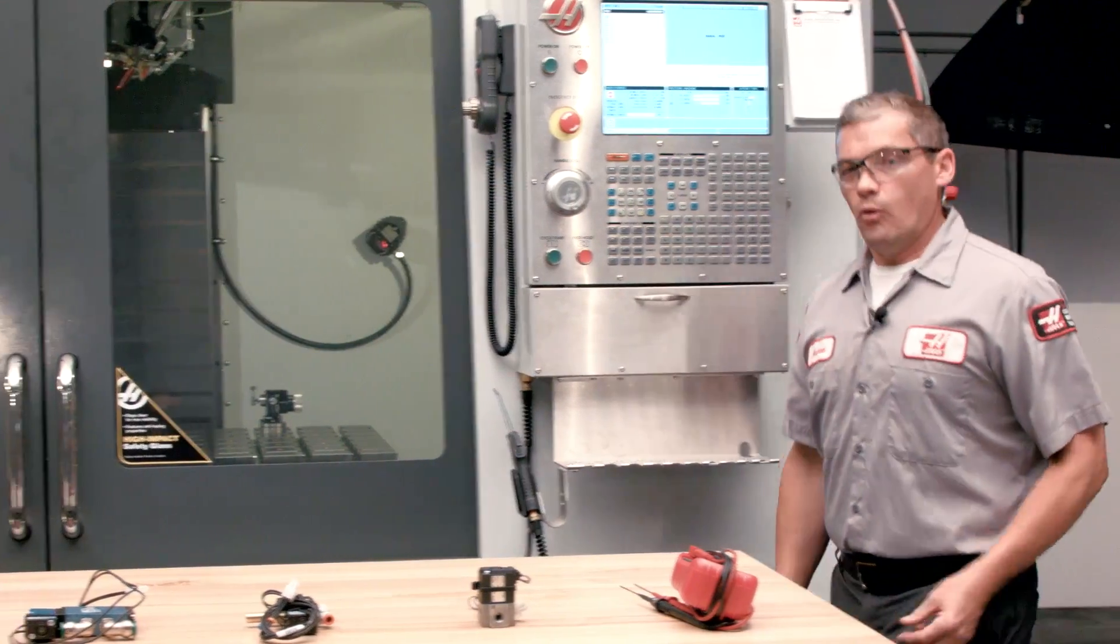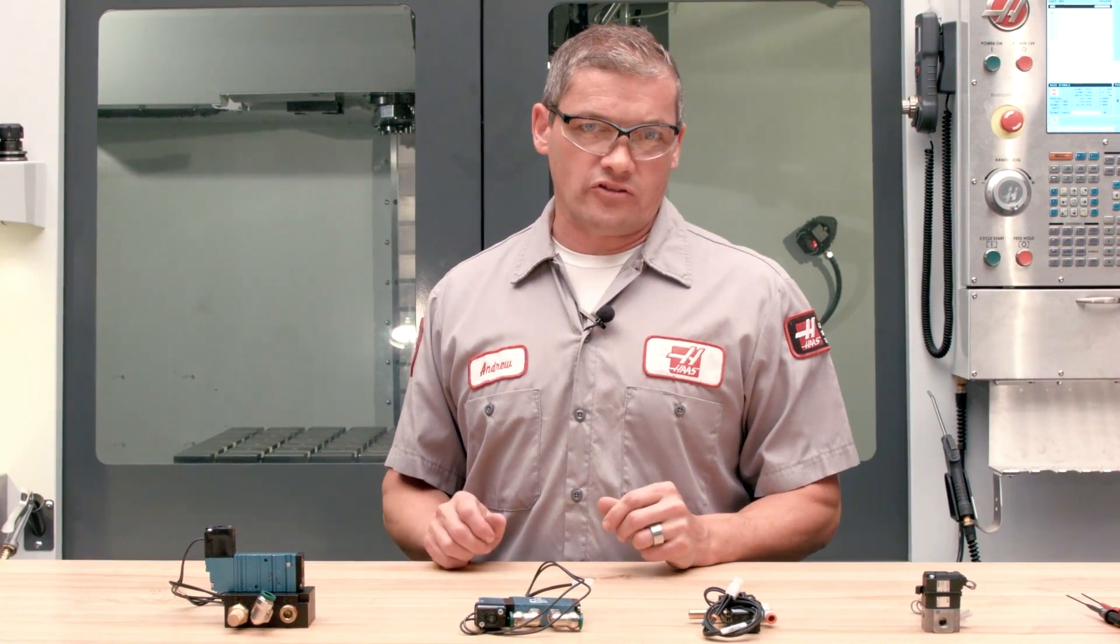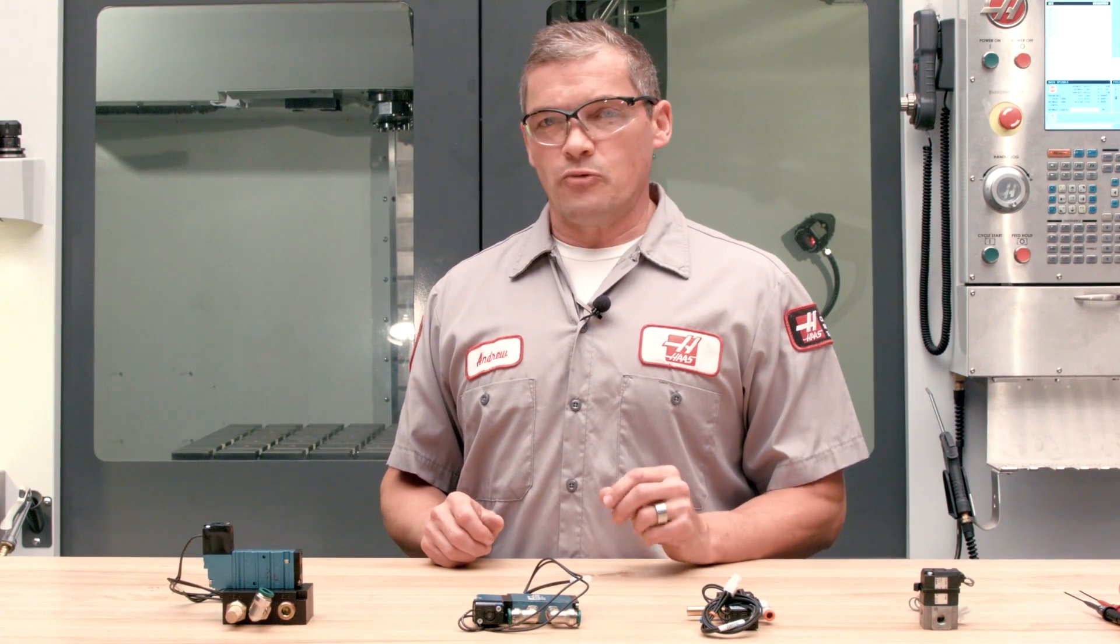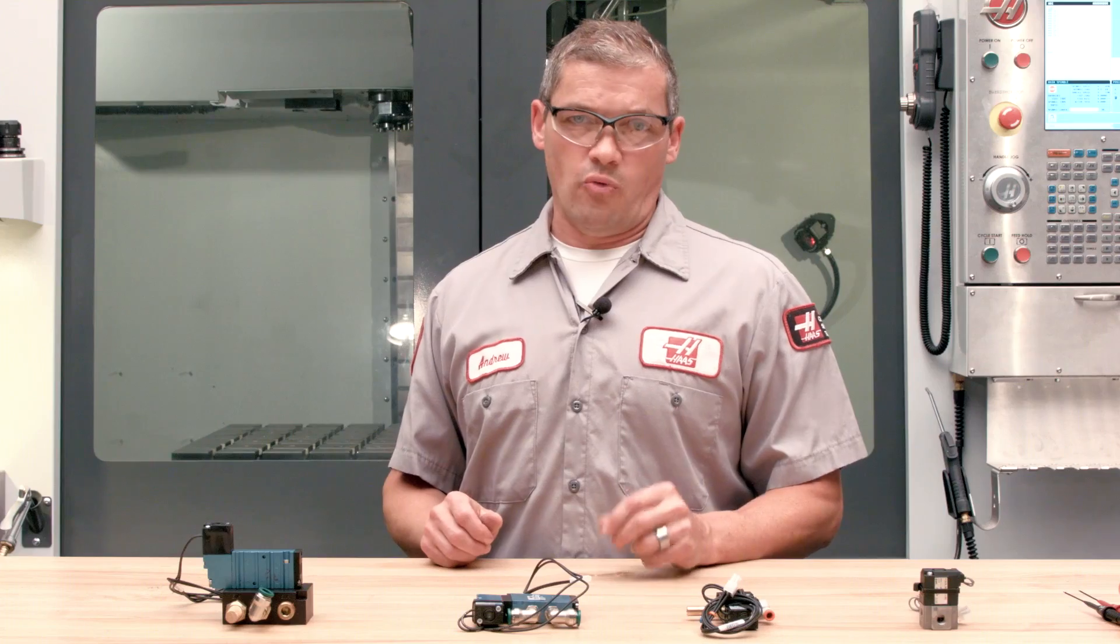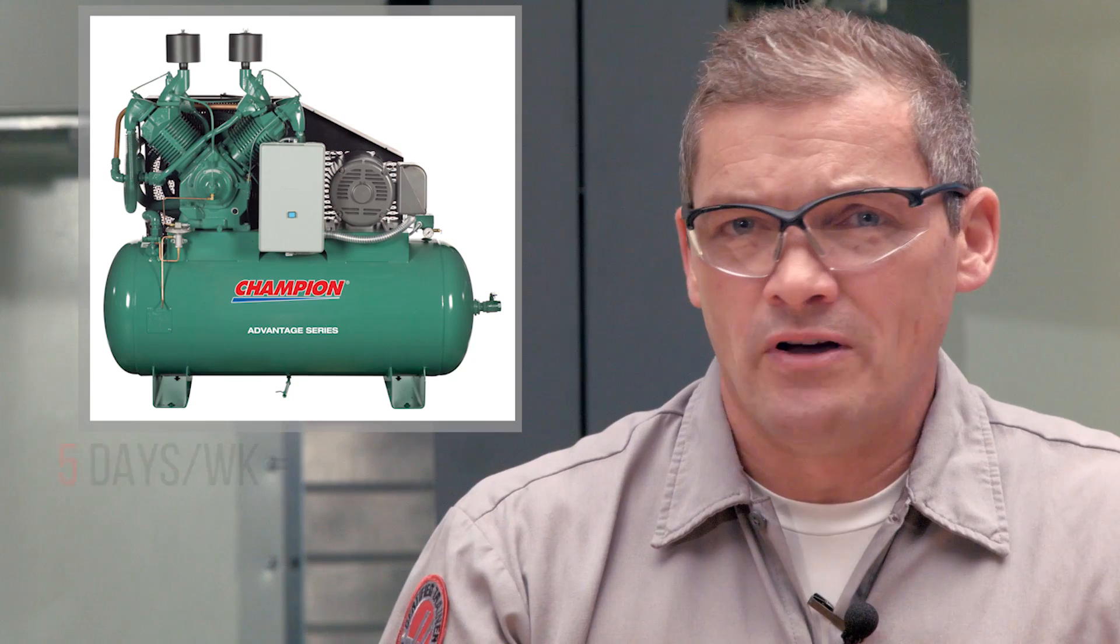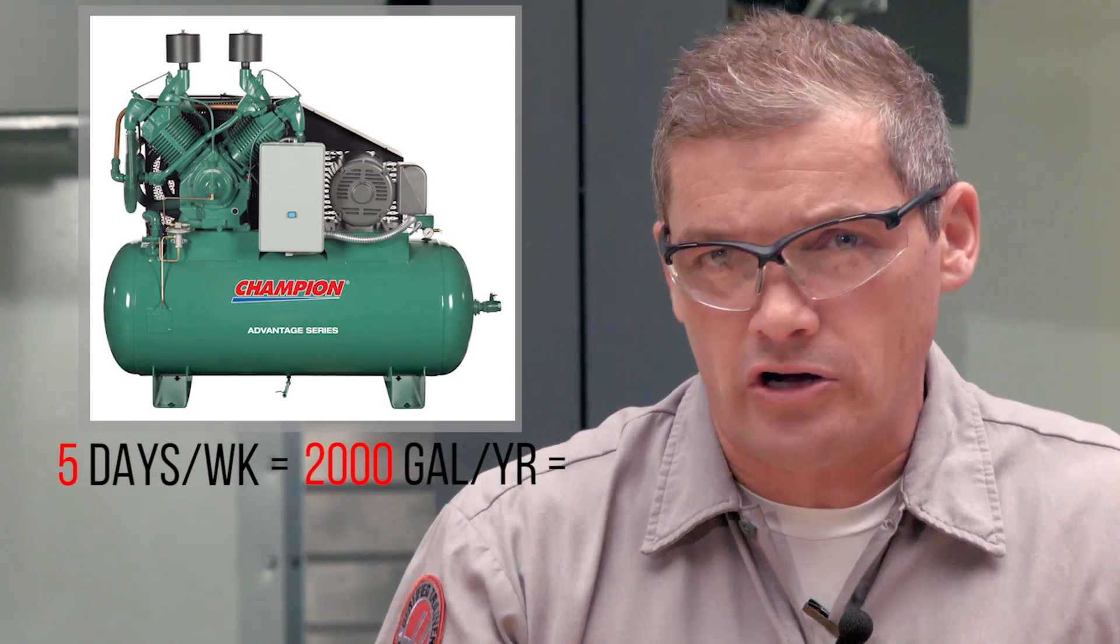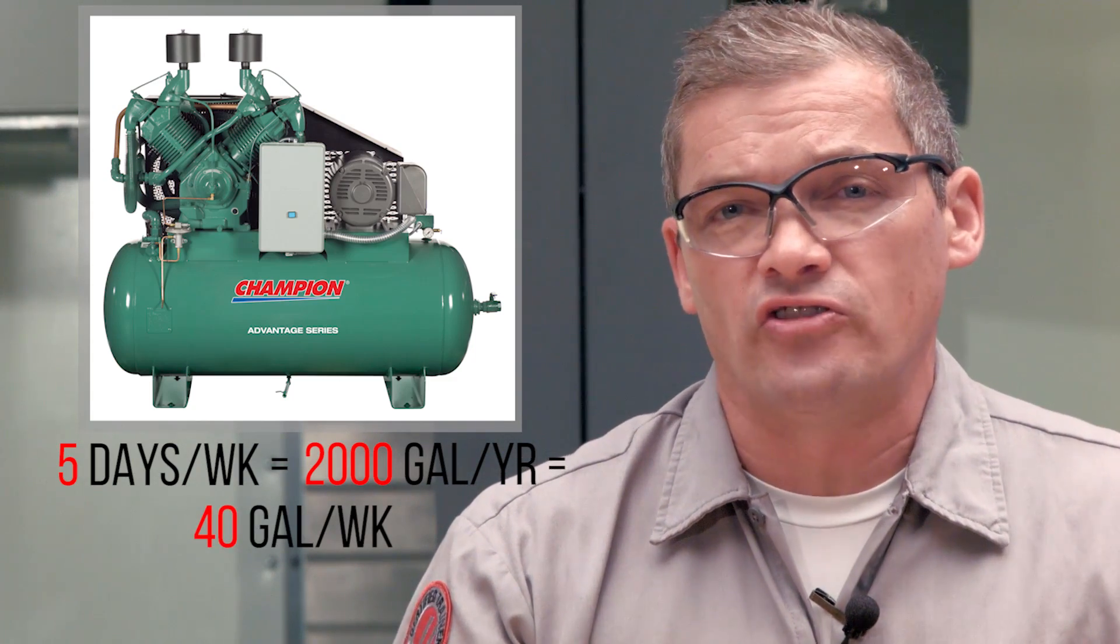You might ask yourself, why is it that so many compressed air installations seem to have problems with water in the airlines? The fact is that every compressed air system has the potential to have big problems with water. It turns out that your air compressor isn't just good at compressing lots of air. It's also pretty good at extracting lots of water as it's compressing that air. Consider this: a relatively small 100 CFM compressed air system running in a typical shop five days a week can easily generate over 2,000 gallons of water in a year. That's about 40 gallons going to the receivers and airlines all throughout the shop every week.